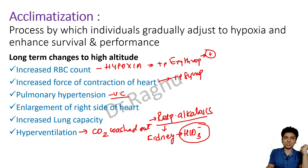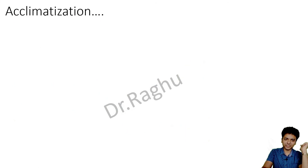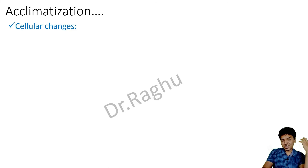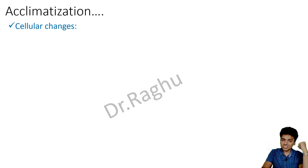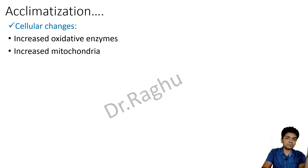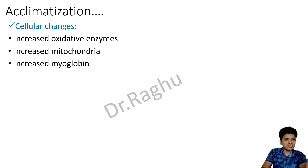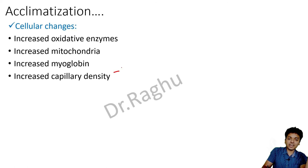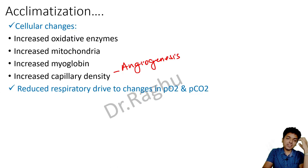These are compensatory mechanisms occurring at higher altitude. Changes also occur at the cellular level: there is an increase in oxidative enzymes — majority present in mitochondria — so there is an increase in mitochondrial count. There is also increased myoglobin, which holds oxygen longer with greater affinity, and increased capillary density through angiogenesis. The respiratory drive to changes in partial pressures of oxygen and carbon dioxide also reduces over a long period.